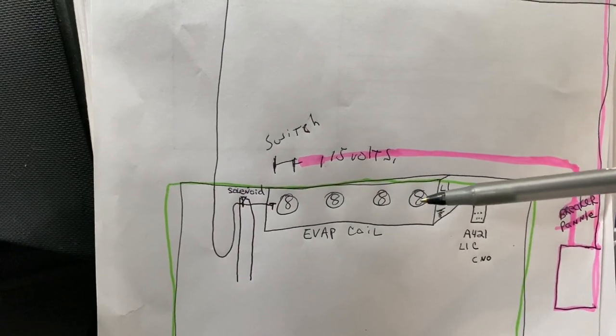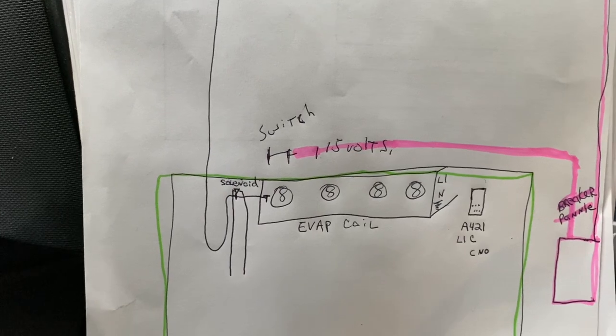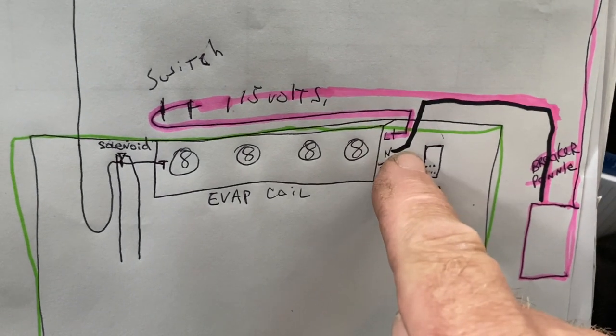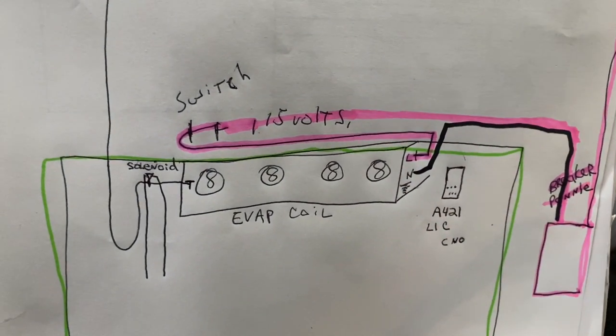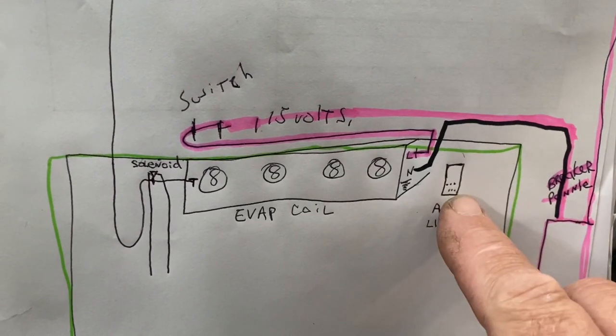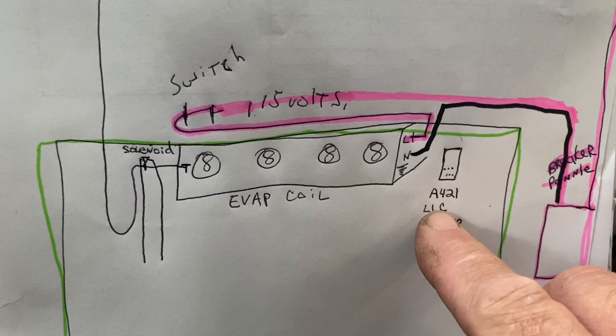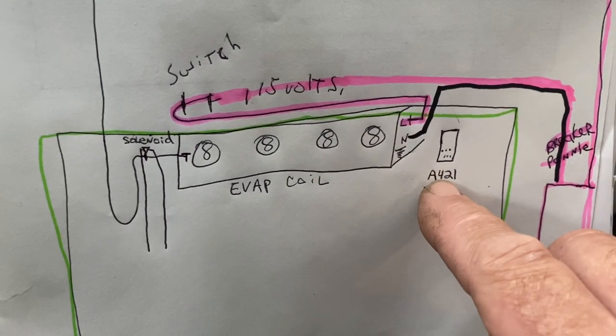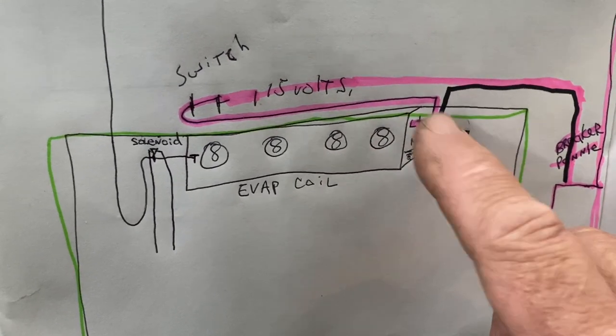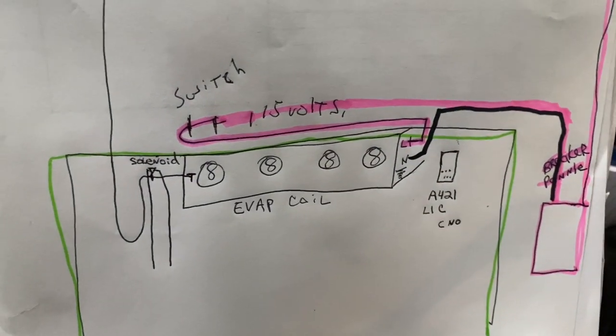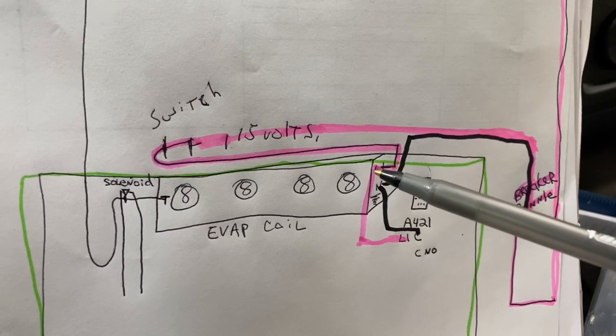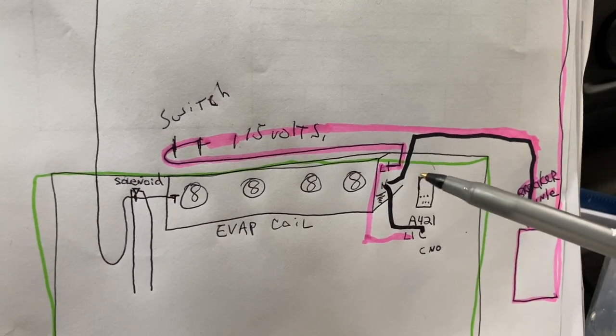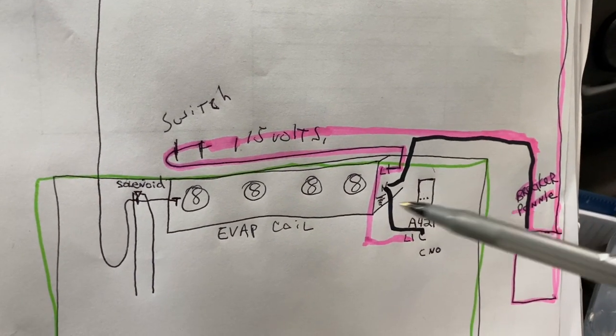And those fans are going to run 24-7. We went ahead and we heated up the fans. We got our L1, neutral goes back to the neutral. Now we've got to fire up, we've got to get power to our A421, which we're going to take from L1 and neutral, and we're going to take those to fire off our thermostat. We need power to power up our thermostat. So we got L1 and we got Common just to get power to fire off our thermostat. So now our thermostat is going to have power. Our fans are running.